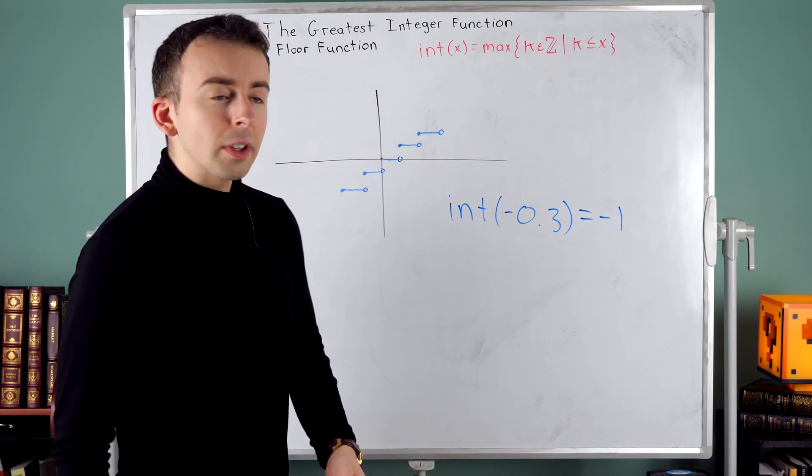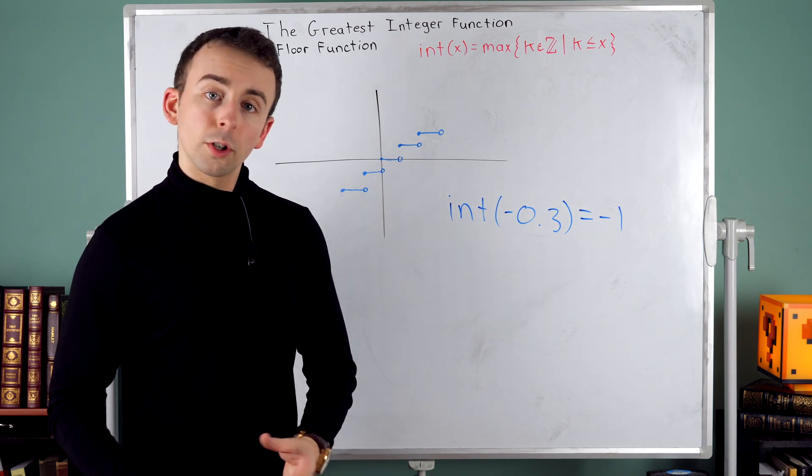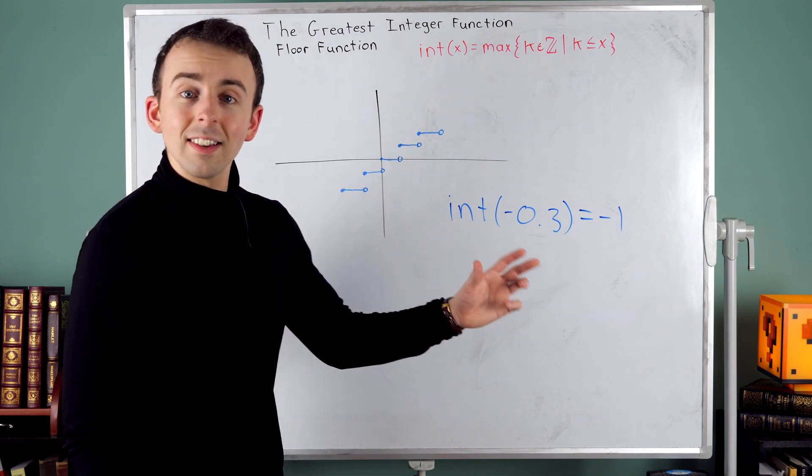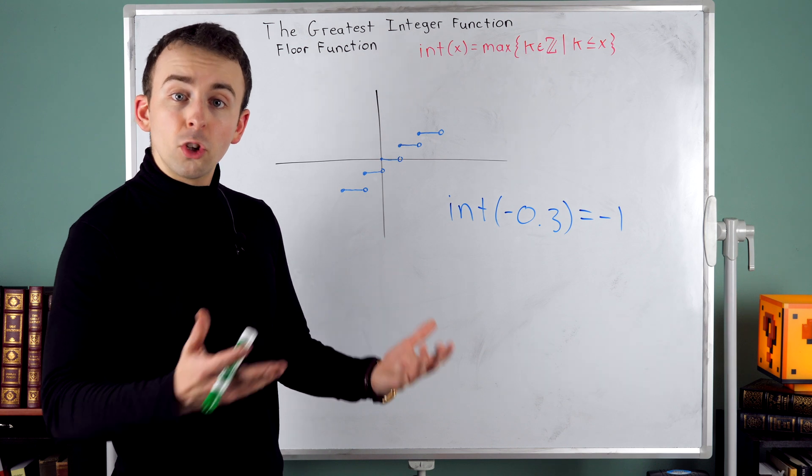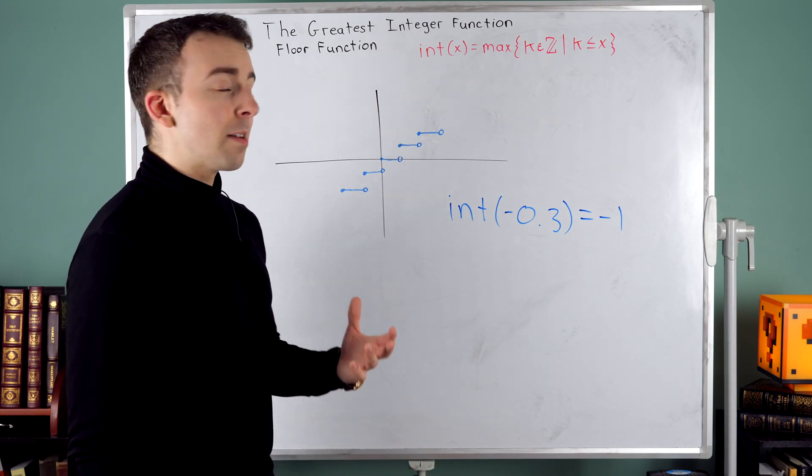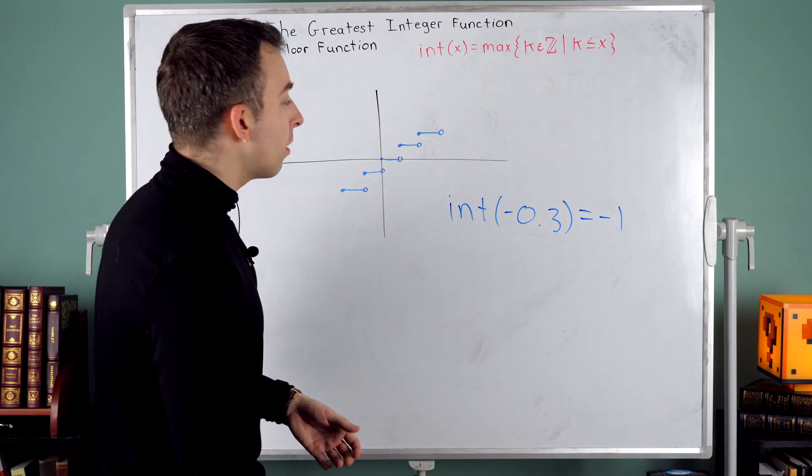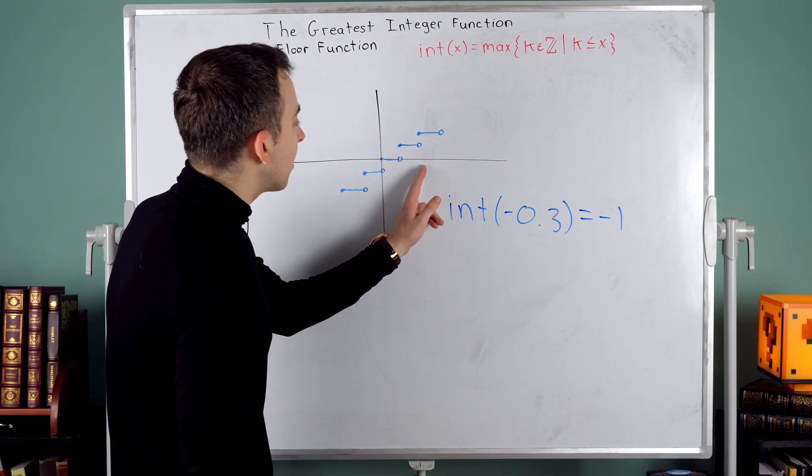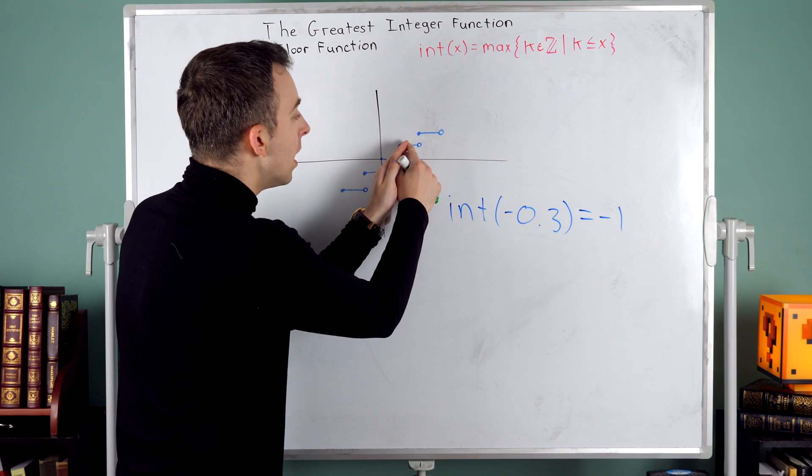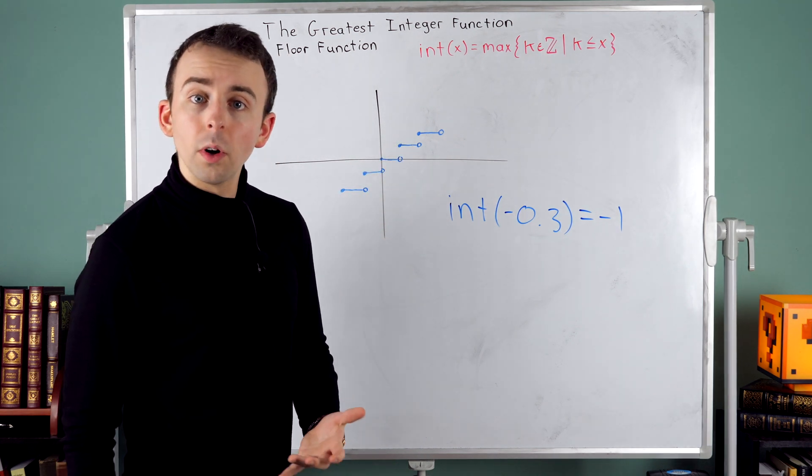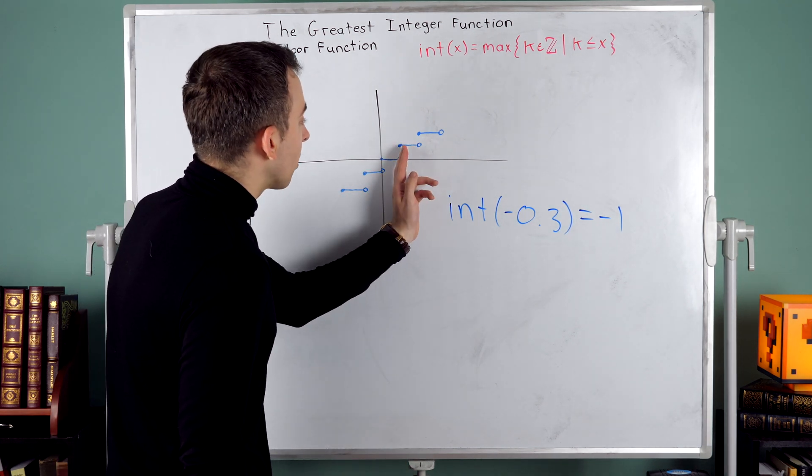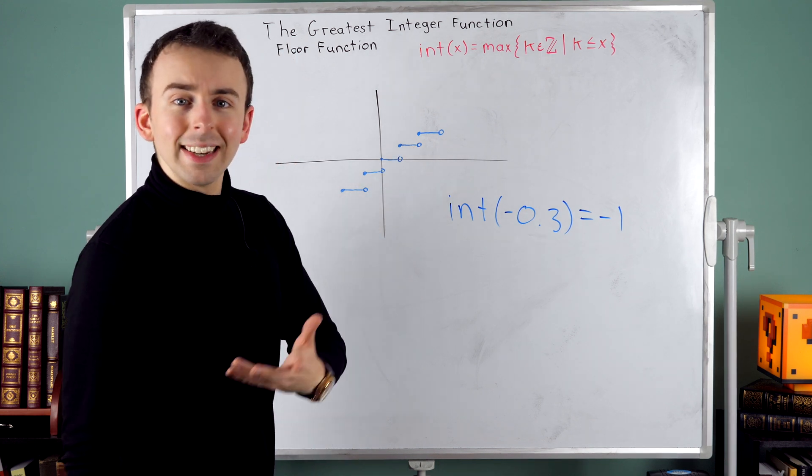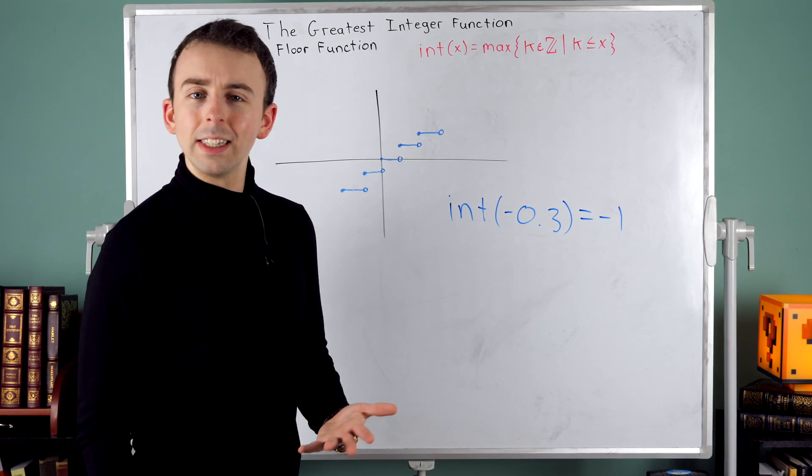And if you're studying calculus, this function also makes for a good introduction to one sided limits and where the two sided limit might not exist. For example, if we look at an integer value like x equals two, as we approach x equals two from the left, the function takes on a value of one because values like 1.9 and 1.99 are still being rounded down to one.